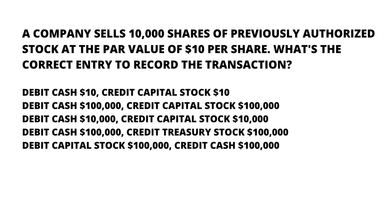This question is about double entry accounting. There are five options in the question. Number one is debit cash $10, credit capital stock $10. The second option is debit cash $100,000 and credit capital stock $100,000.